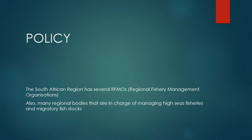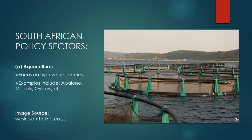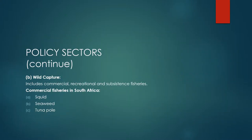Policies are extremely important. We need to protect marine life because there is so much at stake. In the case of South Africa, there are several regional fishery management organizations in order to keep this situation under control. South African policies include aquaculture, which is a relatively new and underdeveloped sector in South Africa. This sector focuses on the protection of high value species such as mussels, oysters, and prawns. Wild capture includes commercial, recreational and subsistence fisheries, each with their own specific research and management mandates.